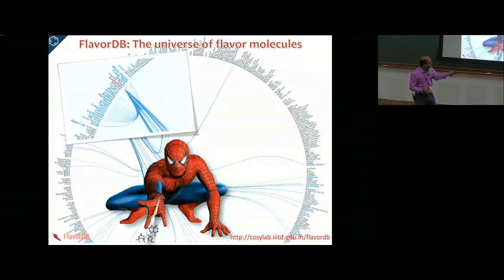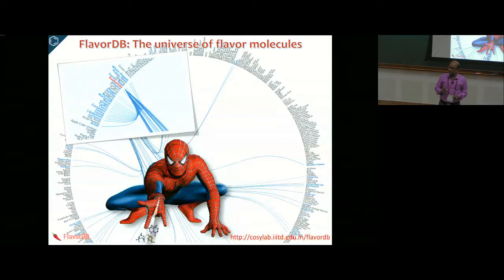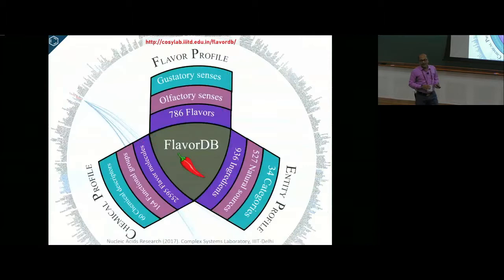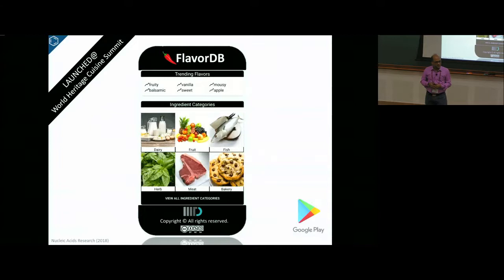These flavor molecules at the molecular level have been reported to have certain odors and tastes. All of this has been compiled in a database called FlavorDB—the Flavor Map, if you wish. It has a variety of attributes at the level of ingredients: what sources they come from, what categories they belong to, their flavor molecules, sensory percepts, tentatively identified receptors, and other details critical for characterizing flavor molecules.